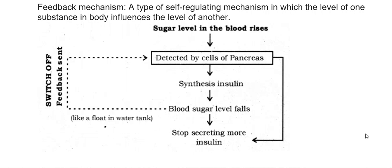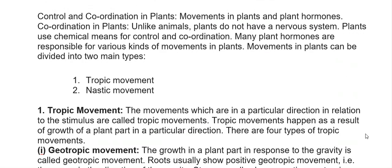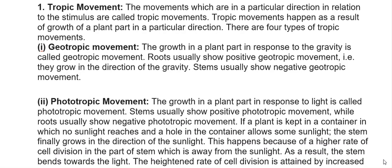Control and coordination in plants: unlike animals, plants do not have a nervous system and use chemical means for control and coordination. Many plant hormones are responsible for various kinds of movements in plants. Movements in plants can be divided into two main types: tropic movements and nastic movements. Tropic movements are movements in a particular direction in relation to a stimulus, and they happen as a result of growth of a plant part in a particular direction. There are four types of tropic movements.